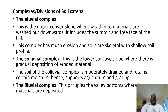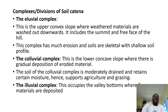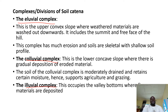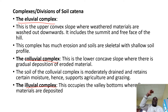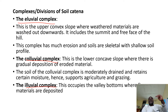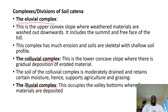When you look at the soil catena, it has three major divisions — three major complexes. It has the eluvial complex, the colluvial complex, and the alluvial complex. The eluvial complex is the upper convex slope where the weathered materials are washed out downwards. It includes the summit — the top of the hill — and the free face. The hilltop and the adjacent region make up the eluvial complex, with shallow soils, bare rocks, and skeletal soils.